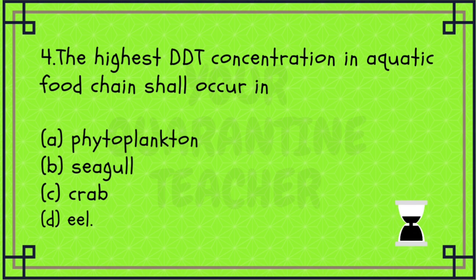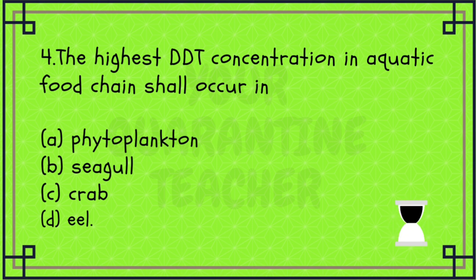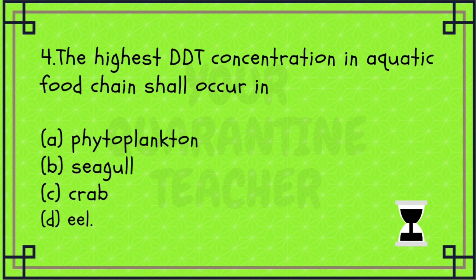A small organism — simple organisms — have a small amount of DDT. For example, grass has DDT content.